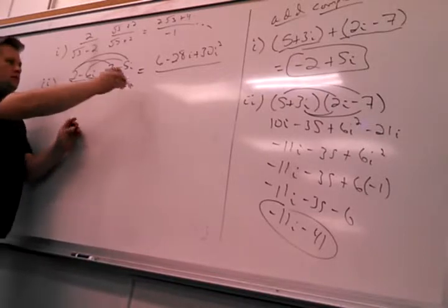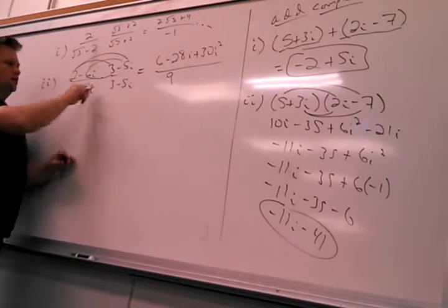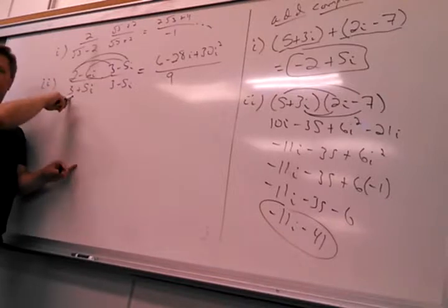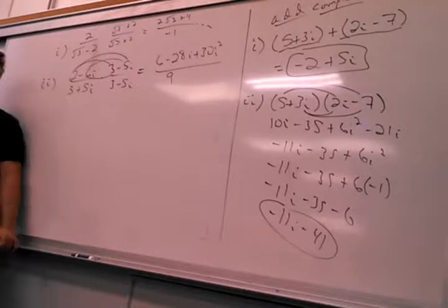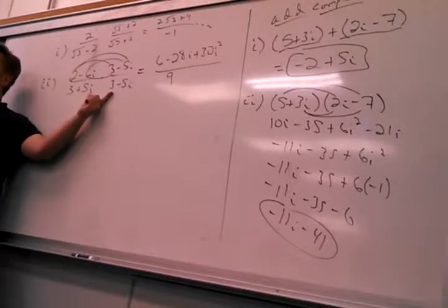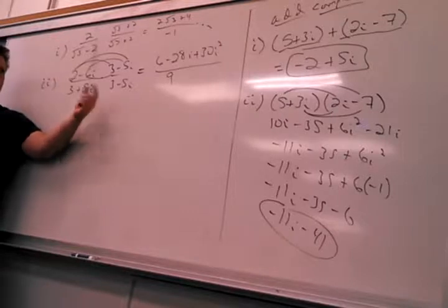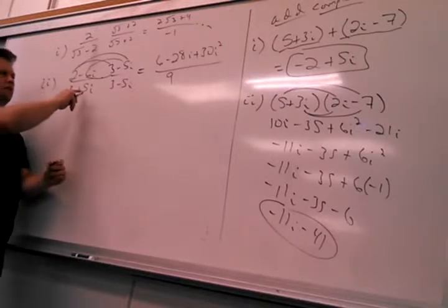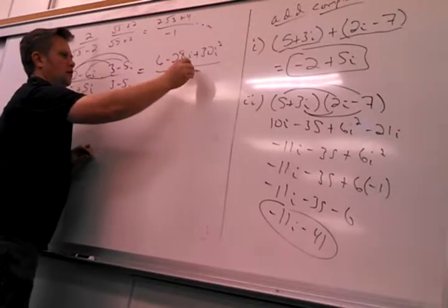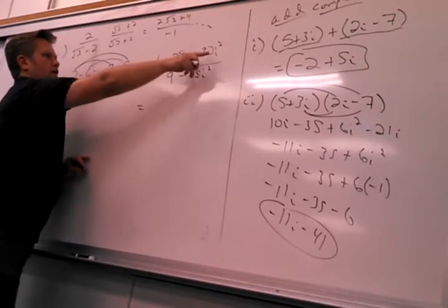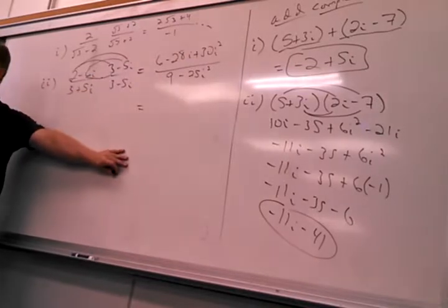On the bottom I get 9 plus 59 minus 59. That's why you multiply the conjugates - all your complex stuff goes away. So you're realizing the bottom, you're making the bottom real. So 9 minus 25i squared. Now I can replace all the i squares with negative 1.